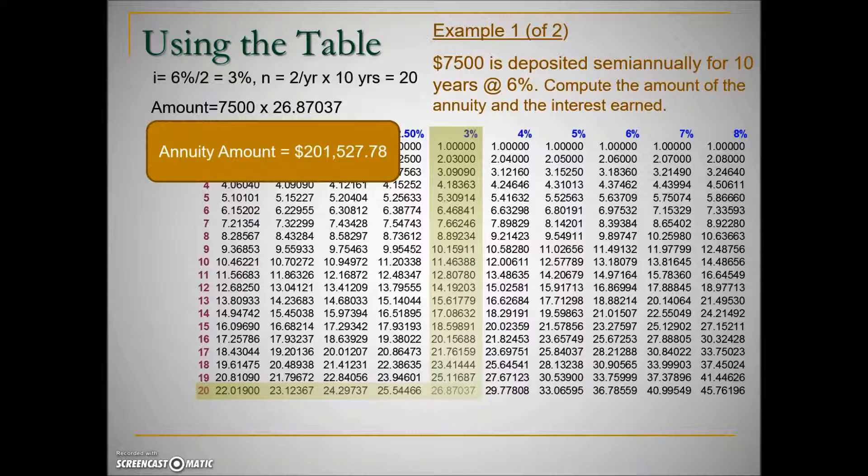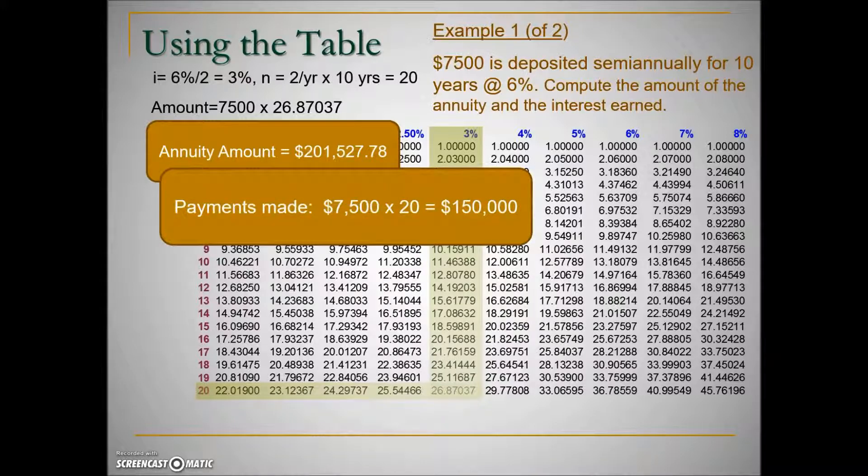How much of this money is actually deposited by the individual and how much of it is the interest that's earned? Well, to determine that, we need to determine how much money is being deposited in this account in the first place. Twice a year, $7,500 is being deposited for 10 years, so that means there's 20 payments of $7,500.